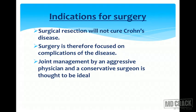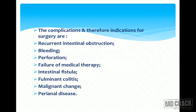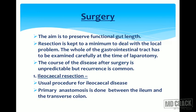Indications for surgery: Surgical resection will not cure Crohn's disease. Surgery is therefore focused on complications of the disease, and joint management by an aggressive physician and a conservative surgeon is considered ideal. The complications and therefore indications for surgery are: recurrent intestinal obstruction, bleeding, perforation, failure of medical therapy, intestinal fistula, fulminant colitis, malignant change, and perianal disease.